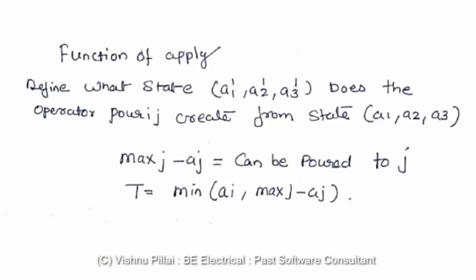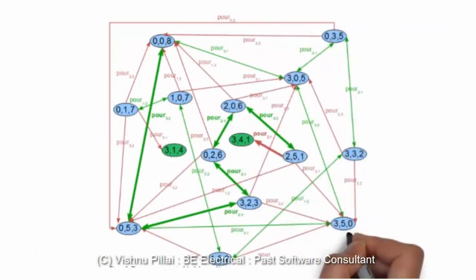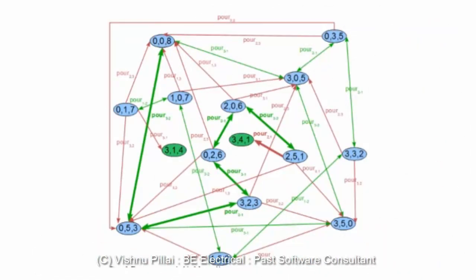The maximum in j minus aj can be poured to j. So that is the amount which can be poured to j. The maximum j is four, and if the amount in a jug is two liters, then the amount that can be poured is two liters. Such kind of conditions you will have to consider while designing the problem.